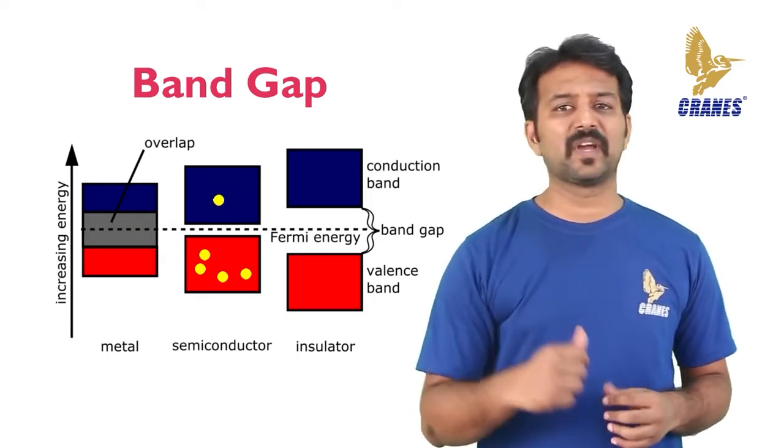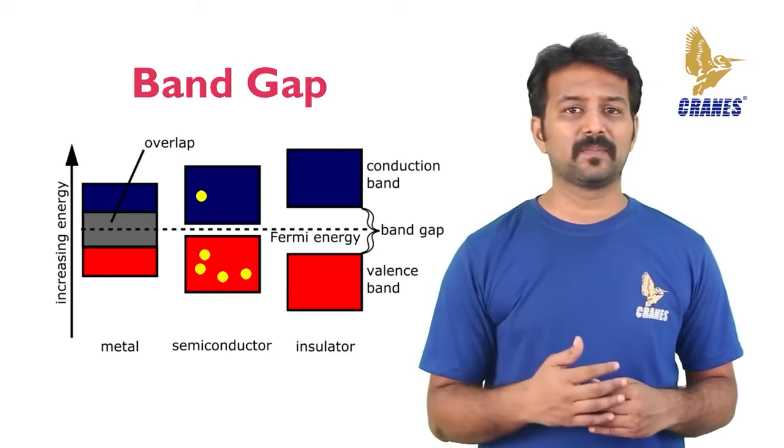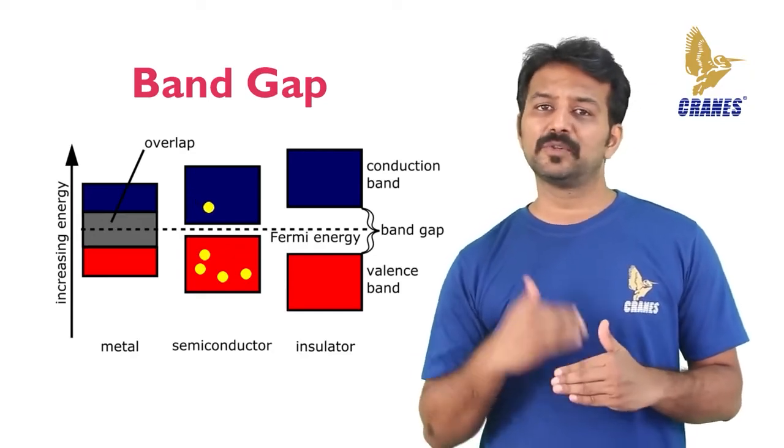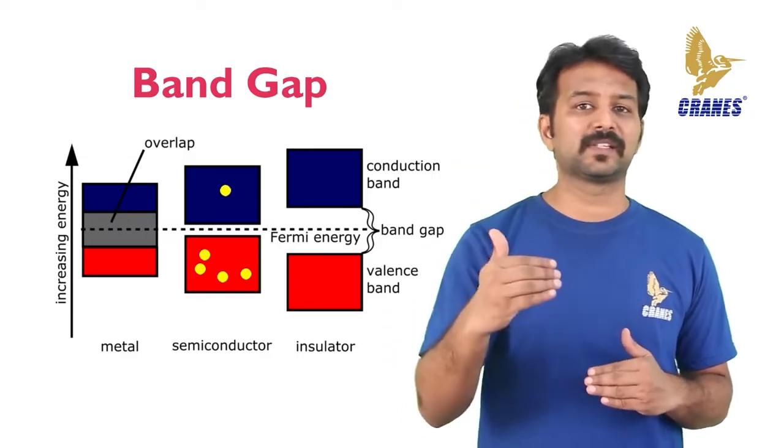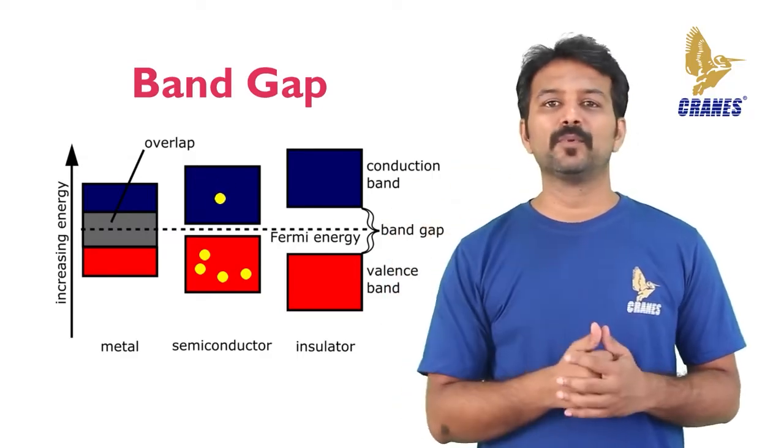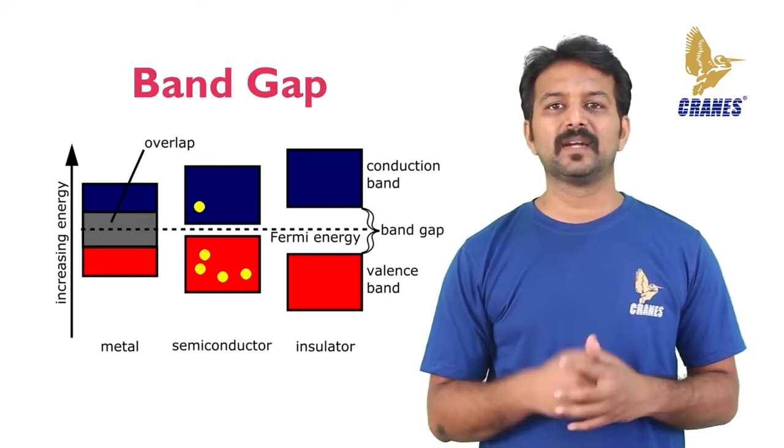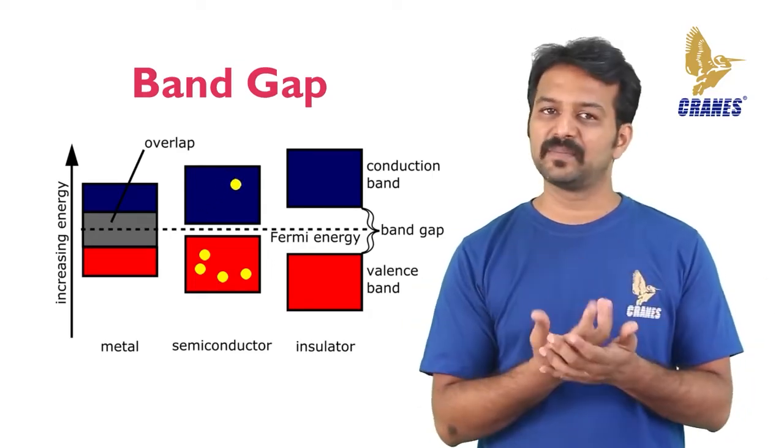This is the amount of energy that a valence electron must have in order to jump from the valence band to the conduction band. Once in the conduction band, the electron is free to move throughout the material and is not tied to any given atom.